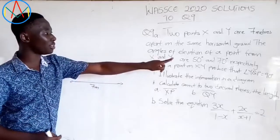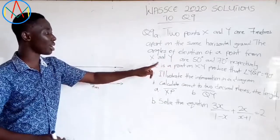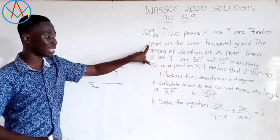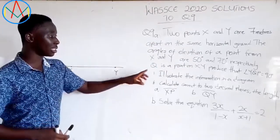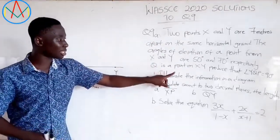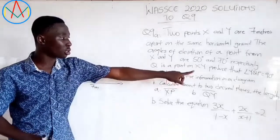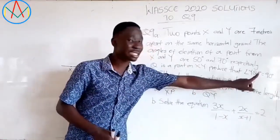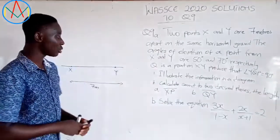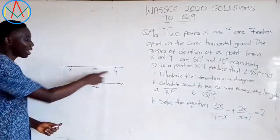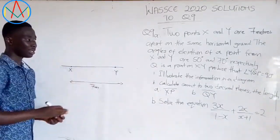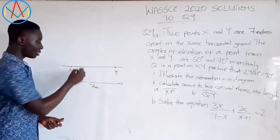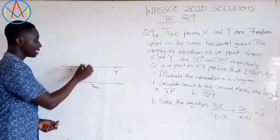They are 7 meters apart. Now the angles of elevation of a point P from X and Y are 50 and 70 respectively. K is a point on XY produced such that angle YKP equals 90 degrees. So this K is a point on XY and it can be anywhere, but it should give us 90 degrees.